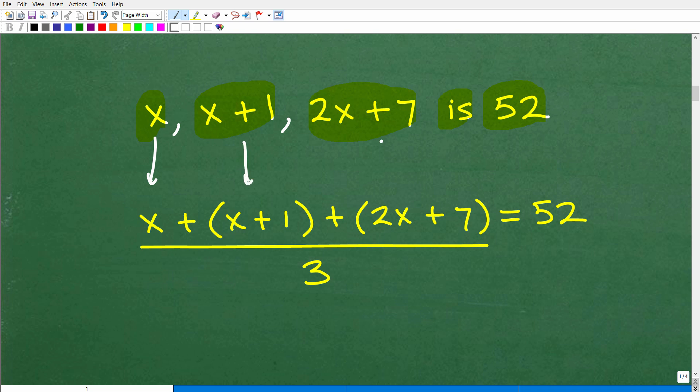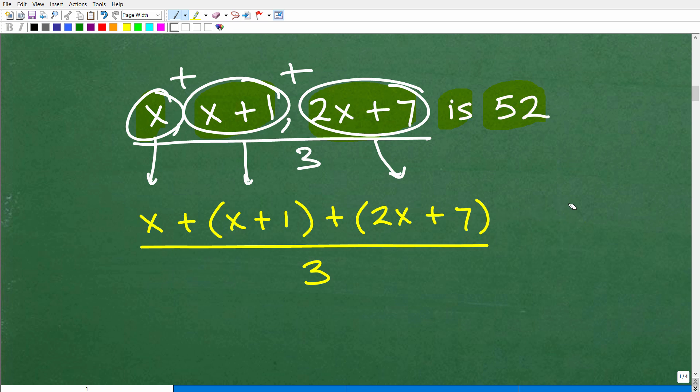Okay. So we have x, x plus 1, and 2x plus 7. I'm putting them in parentheses, grouping symbols, just so they kind of stand out as individual numbers that we're looking for. But, you know, technically you don't have to have those parentheses. But what you do need to do is the following. Okay. I'm trying to find the average of these three numbers. So I'm going to add up these three numbers and divide by 3. So this is how we find the average of these three numbers. We just know that that is going to be equal to 52. The average of these three numbers is equal to 52. Let me write that a little bit nicer here. It is equal to 52.